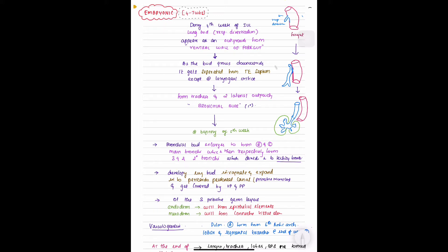The first is the embryonic stage, which lasts from four to seven weeks. During the fourth week of intrauterine life, the lung bud or respiratory diverticulum appears as an outgrowth from the ventral wall of the foregut. As the bud grows downward, it gets separated from the tracheoesophageal septum except at the laryngeal orifice, and forms the trachea and two lateral outpouchings known as bronchial buds.